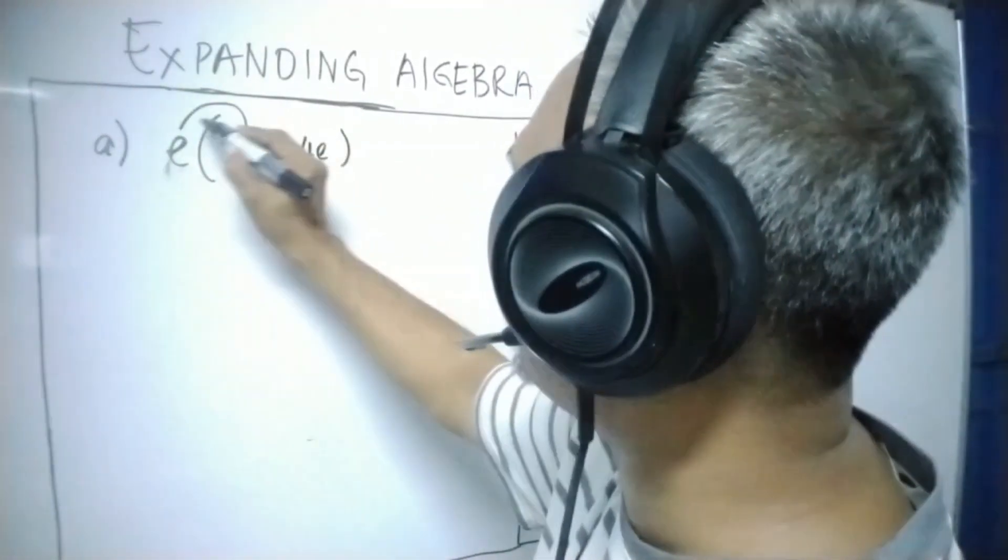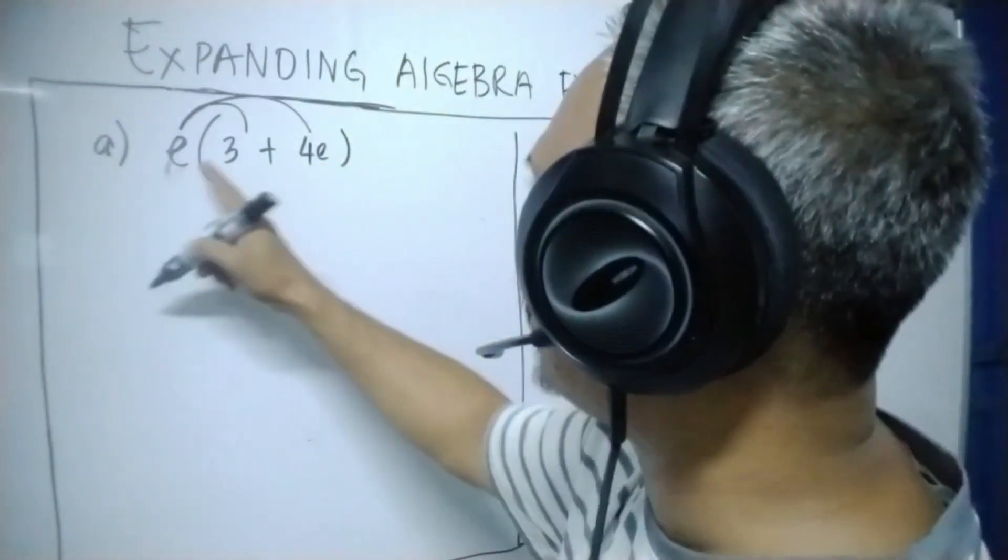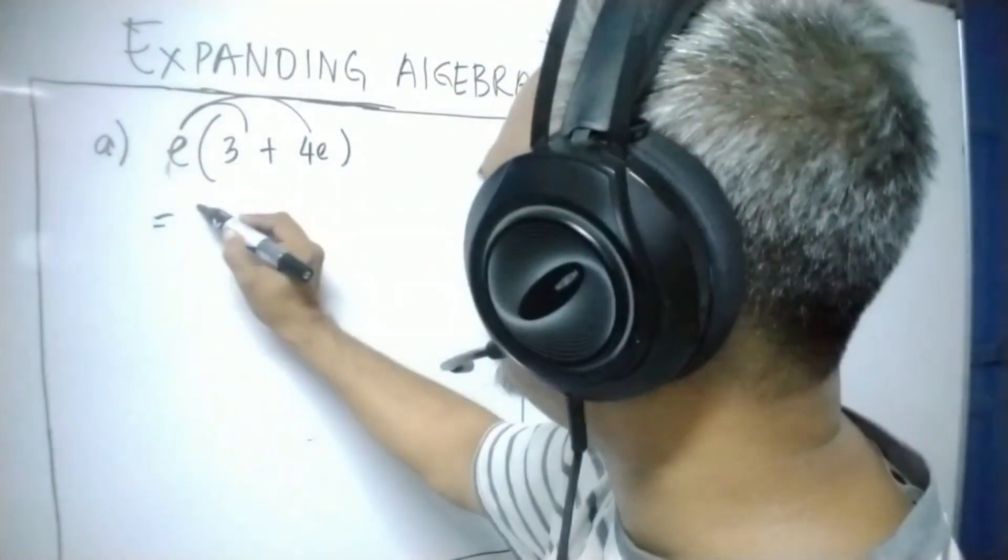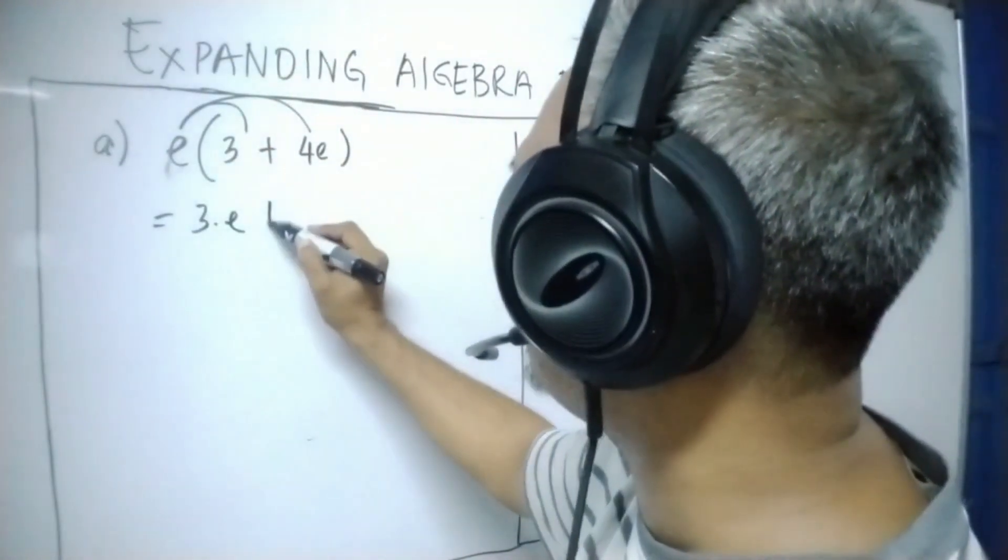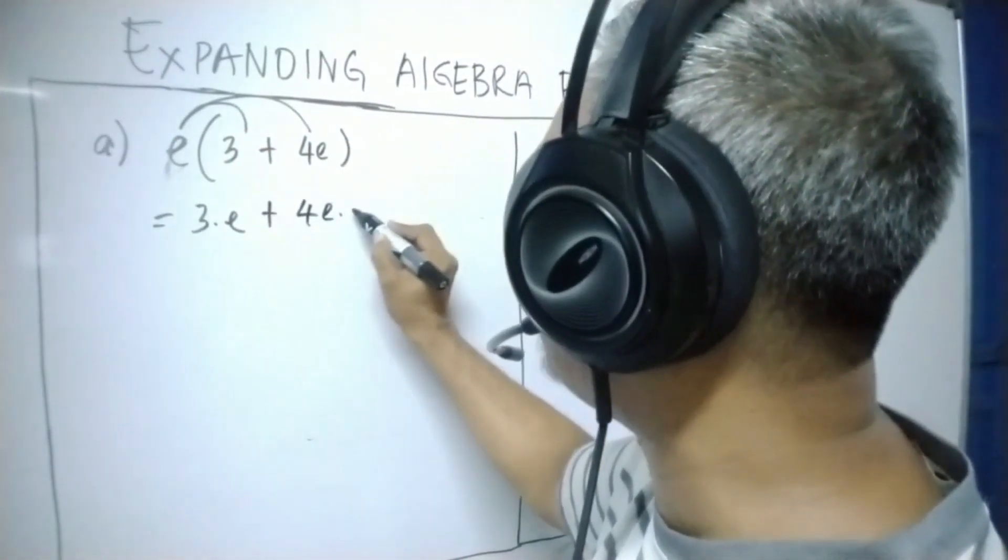Over here we can expand one by one. When E times 3, we get 3E. And then when E times 4E, we get 4E times E.